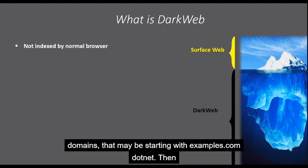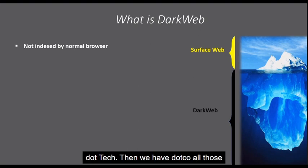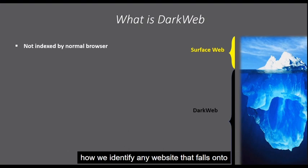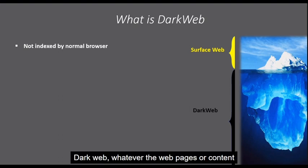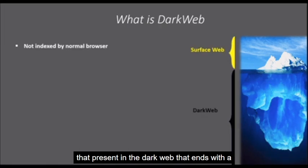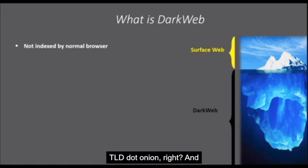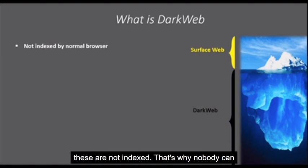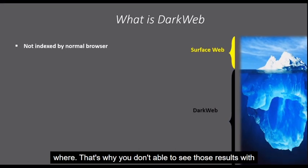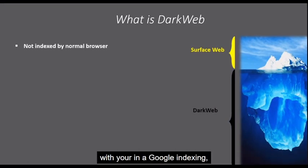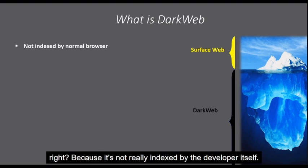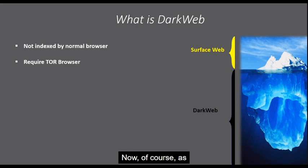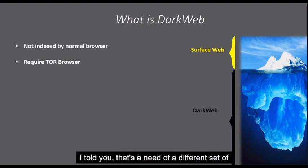Just like we have top-level domains such as .com, .net, .tech, .co — that's how we identify any website — similarly, web pages or content present in the dark web end with the TLD dot onion. These are not indexed, so nobody can crawl them and nobody gets to see what's there. That's why you don't see those results in Google search — because the developer itself does not index it.